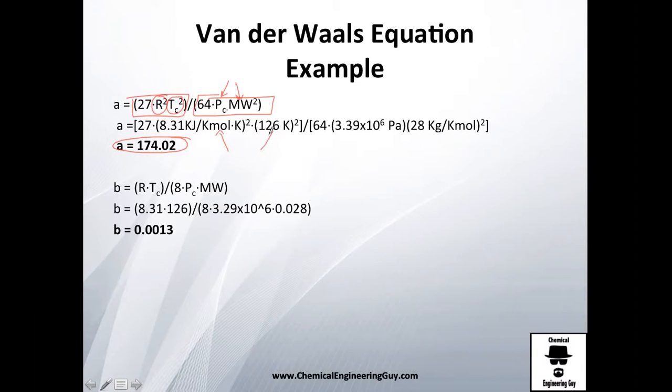If you want to check out how everything cancels out, go and check. Now for B, it's easier: R times Tc divided by Pc and MW. Do it again, and look how I changed this 28 grams per gram mole to 28 grams per kilogram. Essentially just divide by 1000, and I got this value.